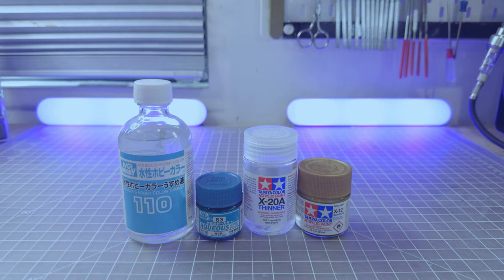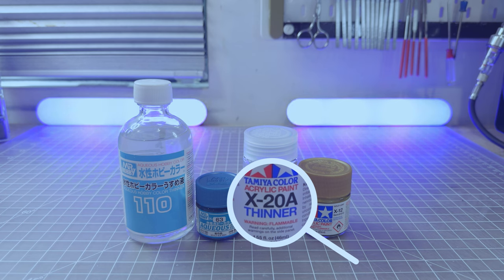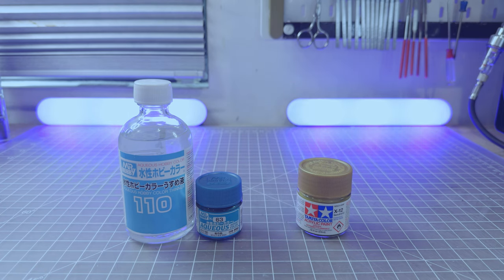X20A for the Tamiya acrylic paints. Make sure it's 20A because X20 is enamel thinner, but X20A is acrylic paint thinner. They should really change their name. This is so confusing.